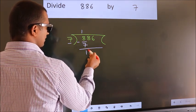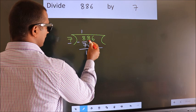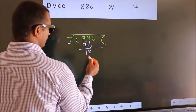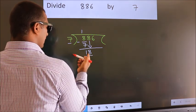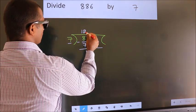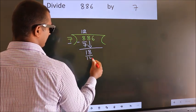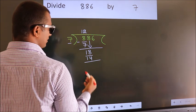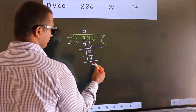After this, bring down the beside number. So 8 down, so 18. A number close to 18 in the 7 table is 7 twos 14. Now we subtract. We get 4.